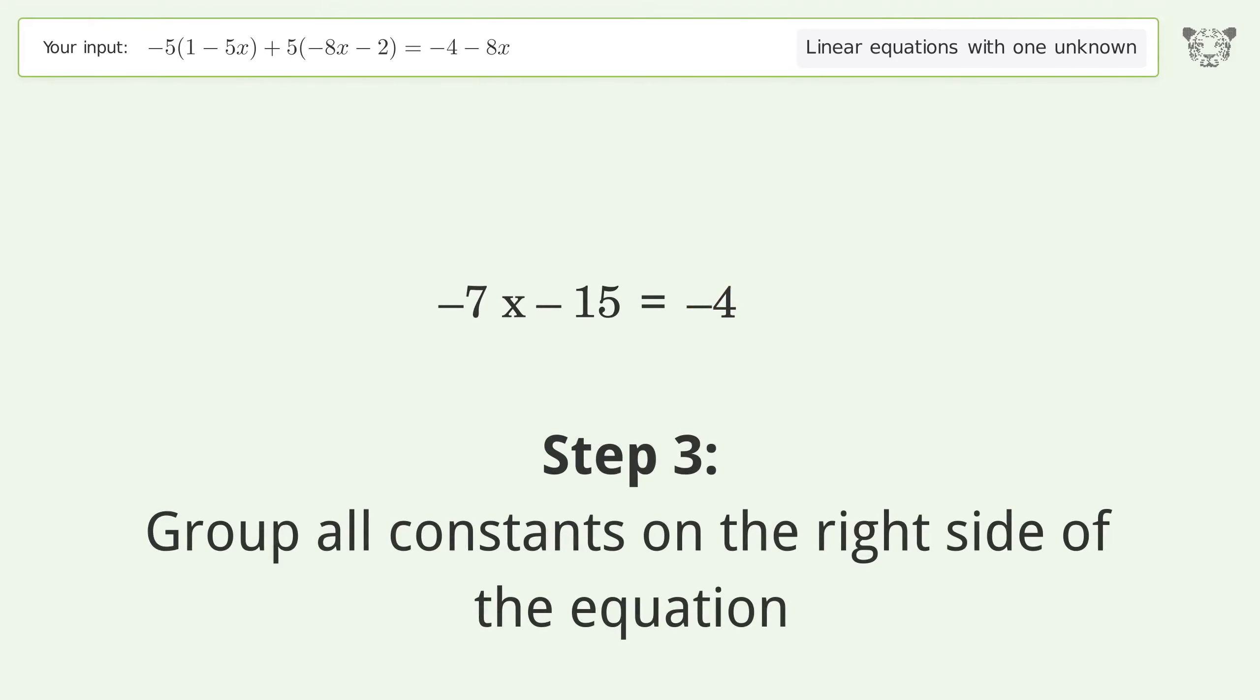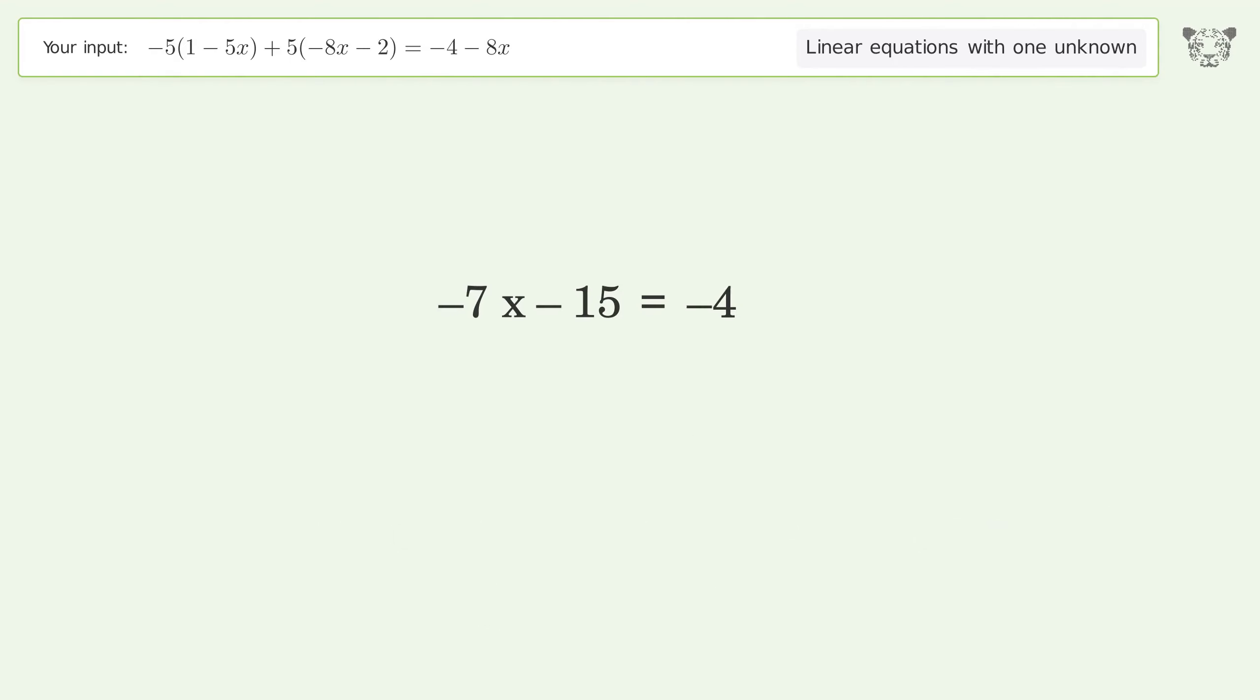Group all constants on the right side of the equation. Add 15 to both sides. Simplify the arithmetic.